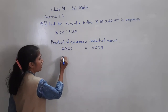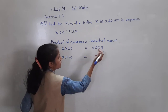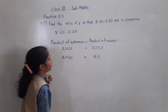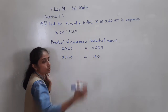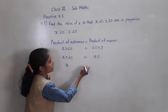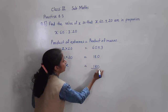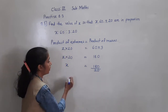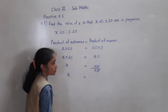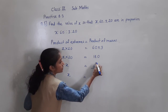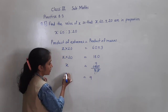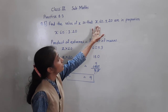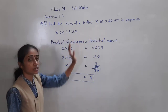So X multiplied by 20 is equal to 60 threes, which are 180. 3 zeros are 0, 3 sixes are 18. Now 20 is here multiplied - transfer to the right-hand side and it becomes divide. So X is equal to 180 divided by 20. The trailing zeros cancel, so 18 divided by 2: 2 nines are 18. So X is equal to 9. Find the value of X so that these are in proportion - X is equal to 9.